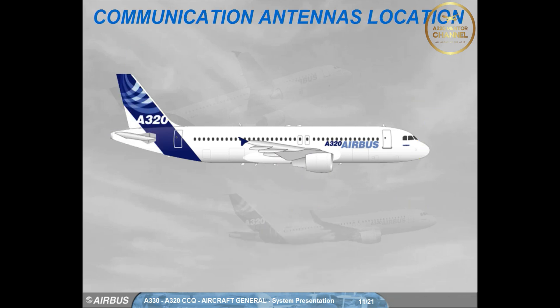Let's briefly familiarize ourselves with the location of the communication antennas: VHF1, VHF2, VHF3, and HF1 and 2.